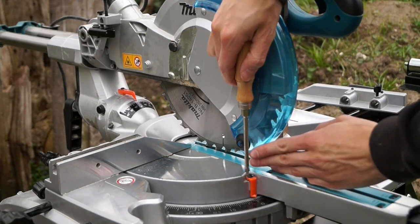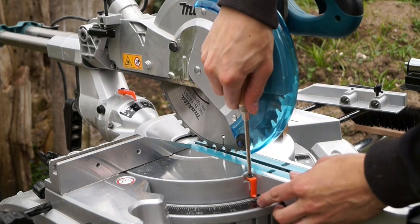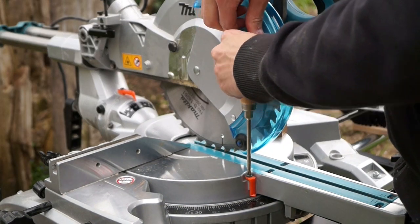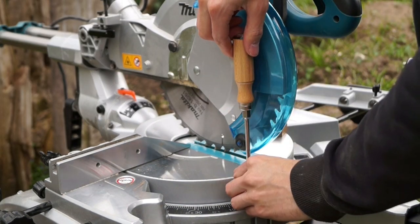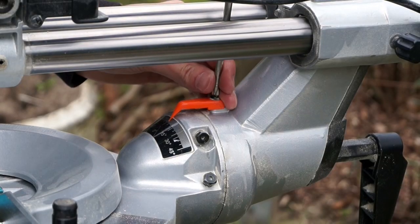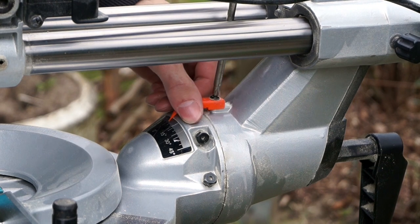Before we can go on to the next steps, we have to readjust the pointers on the scales. Set both of them absolutely perfectly on the zero degree mark. Both the one for the vertical adjustment as well as the one for the horizontal adjustment.